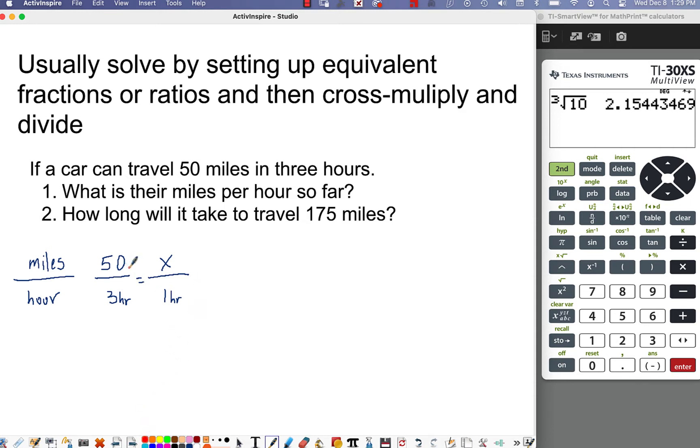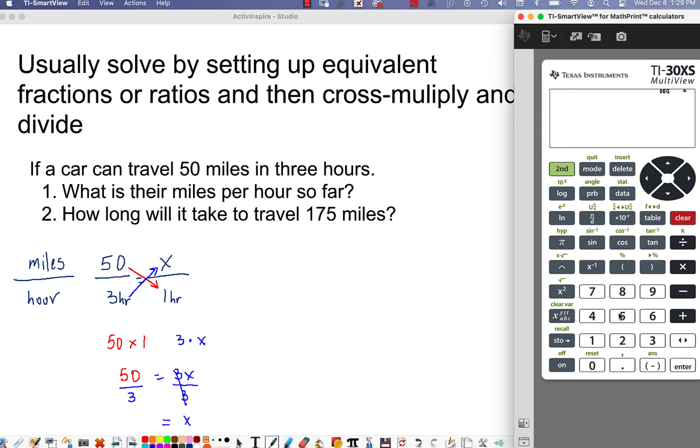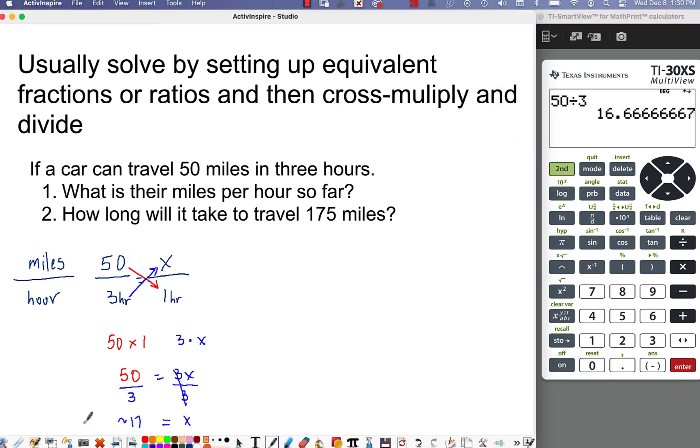So we want to solve for this. So now this is where that cross multiplying and dividing comes in. So we're going to take 50 times one hour. So 50 times one is going to be 50. And then three times x, so that will equal 3x. And so there we've cross multiplied. Now we divide to isolate x here. So we're going to divide each side by three to undo that multiplication. And x is equal to 50 divided by three. So let's come over here to the calculator. 50 divided by three is roughly, you could round up to about 17, 16.7.